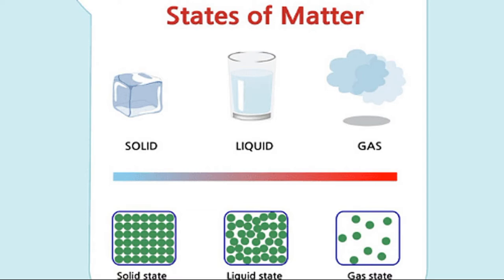Of all the states of matter, gases are the most interesting. They have very small masses because of their low densities. Scientists have always been interested in the relationship between the moles of a gas and the volume occupied by that gas. One scientist in particular, named Avogadro, noticed that all gases under the same conditions of pressure and temperature, occupying the same volume, contained the same number of molecules, and therefore proposed a law known as Avogadro's law.